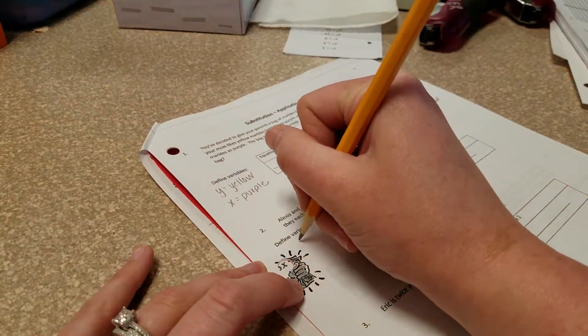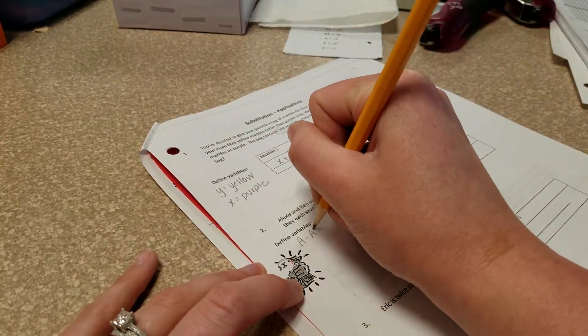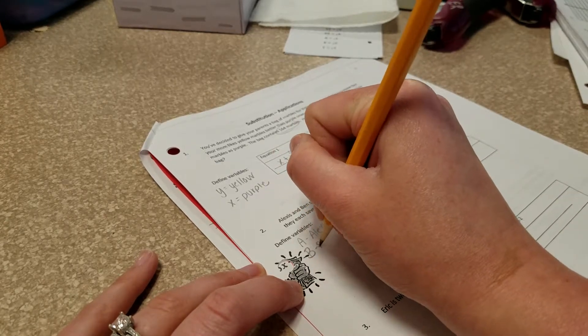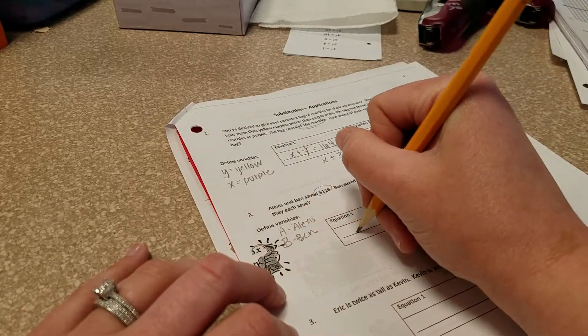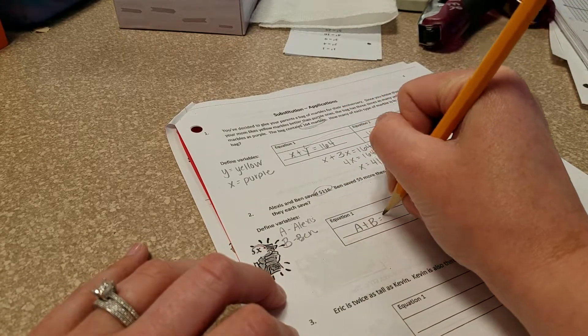So we can actually use different letters if we want to. A can represent Alexis. B can represent Ben. So we know together they saved $116. So Alexis plus Ben equals $116.